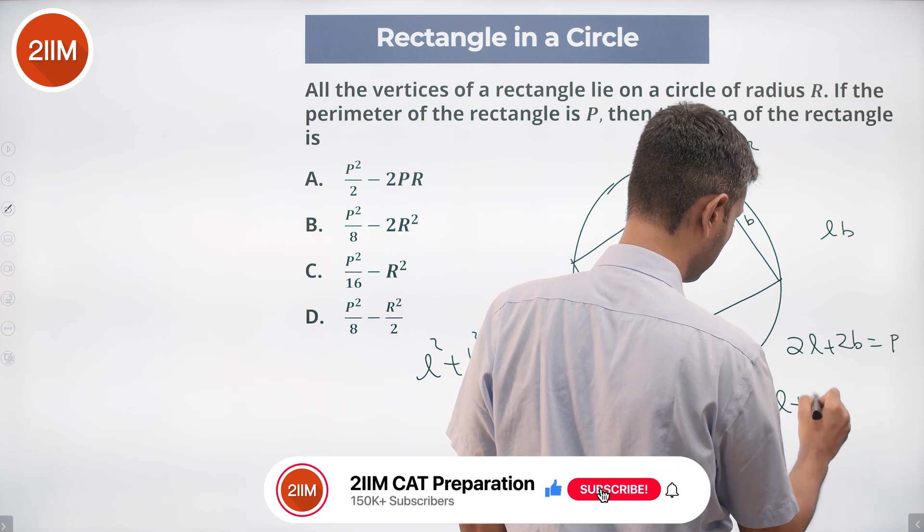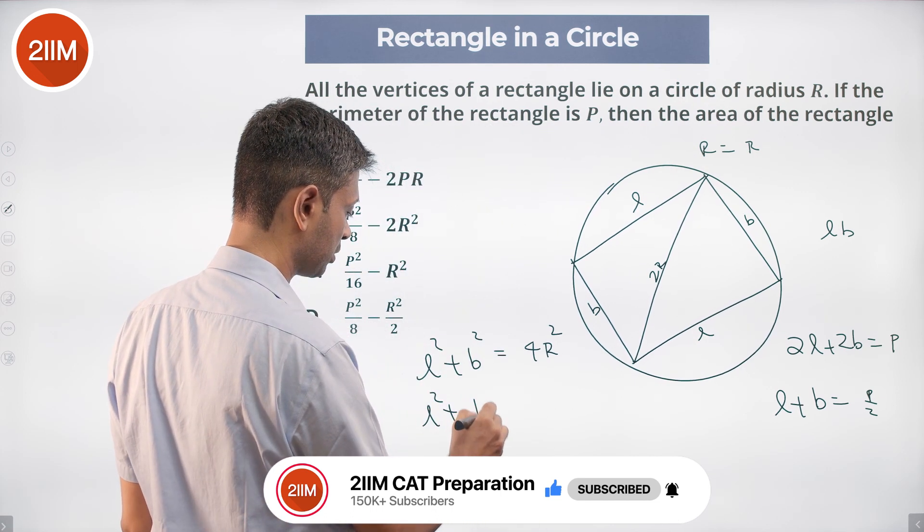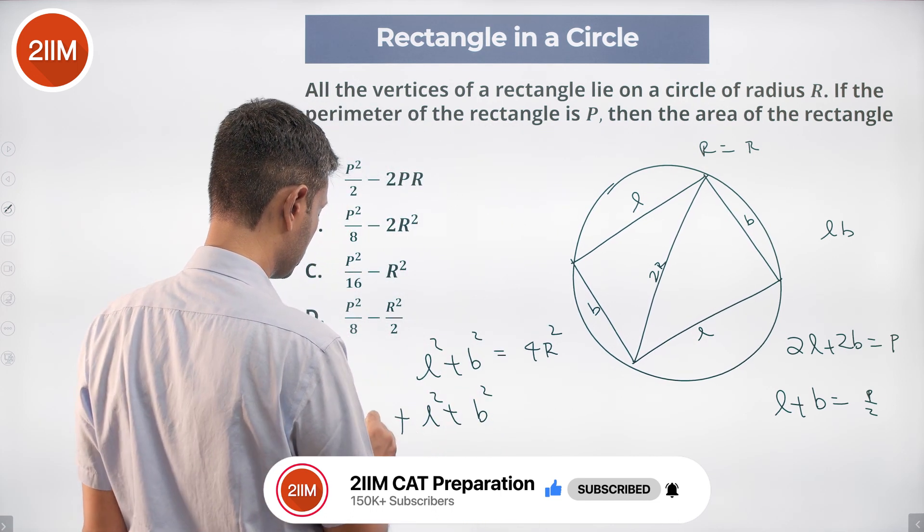Or L plus B equals P by 2. So L square plus B square plus 2LB equals P square by 4.